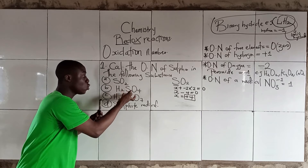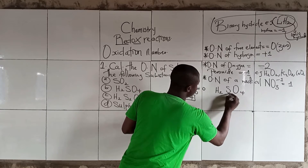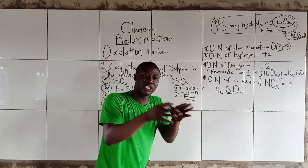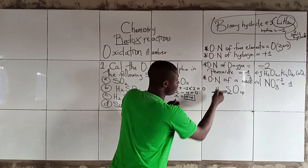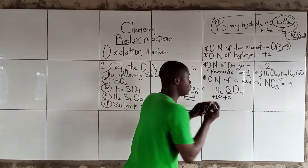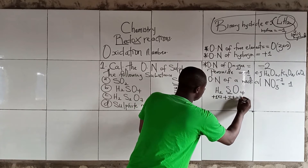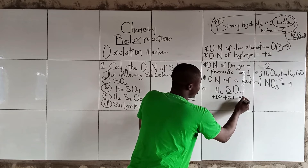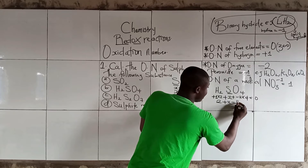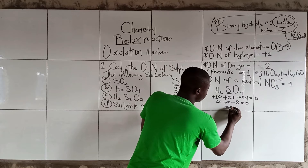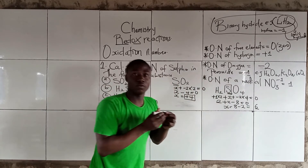Now let's solve the oxidation number of sulfur in H₂SO₄. We know the oxidation number of hydrogen is positive one and there are two atoms, and oxygen is negative two with four atoms. So: (+1 × 2) + X + (−2 × 4) = 0, giving us 2 + X − 8 = 0, so X = +6. The oxidation number of sulfur in H₂SO₄ is positive six.